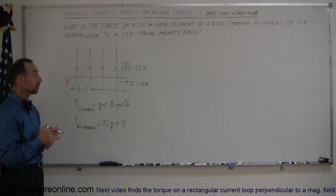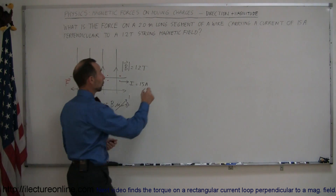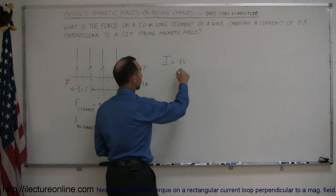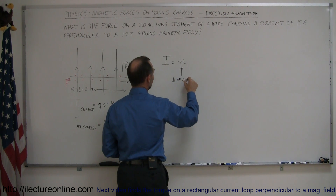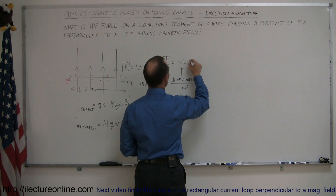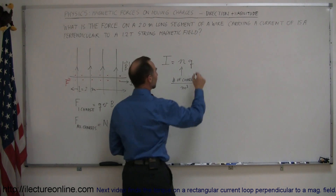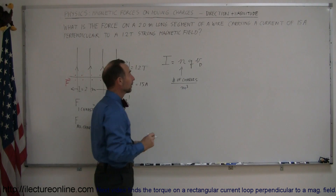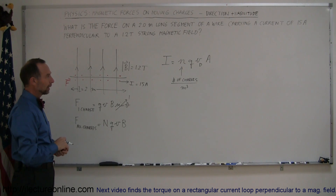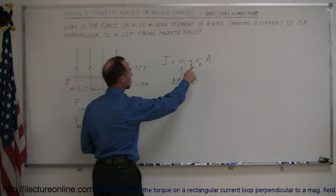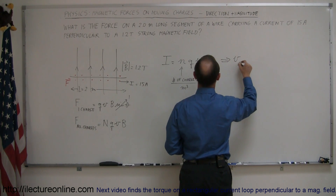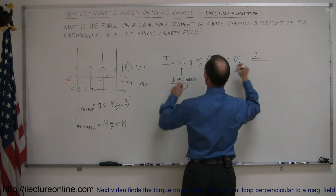We go back to the concept of the drift velocity. In a current-carrying wire, the total current through the wire is equal to the number of charges per unit volume (n), times the size of each charge Q, times the drift velocity of the charges through the wire, times the cross-sectional area A. If we solve this for the drift velocity V_d, we get V_d equals I divided by nQA.